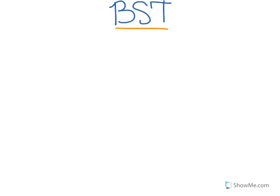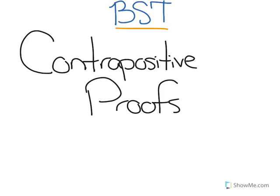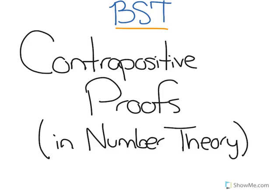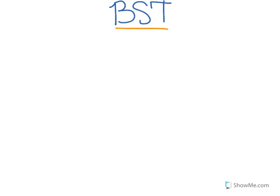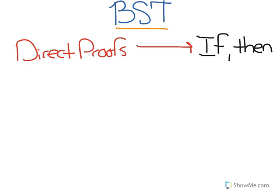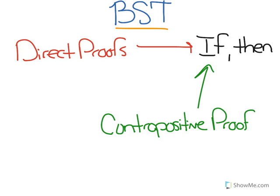Hi, I'm a Bullis student tutor, and in this video I'm going to be talking about contrapositive proofs and their relationship to number theory. As we've talked about in previous videos, number theory is all about asking questions about math and using formal proofs to answer those questions. In our last video we talked about using direct proofs to prove conditional statements, or if-then statements. But we can also use what's known as a contrapositive proof to prove if-then statements, and a lot of times this is easier.